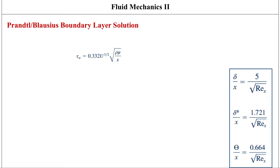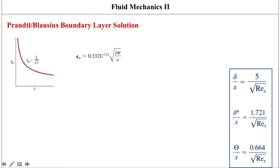From the Blasius solution, this is the wall shear stress equation. It indicates that shear stress decreases with increasing x because of the increasing thickness of the boundary layer — the velocity gradient at the wall decreases as x increases. Also note that τ_w varies as U to the three-halves power, which differs from fully developed laminar pipe flow where τ_w varies linearly with U.